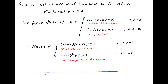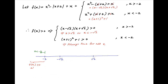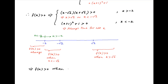Now if we plot this information on the number line, the relevant points are minus 2, minus root 2, and plus root 2. In the second case, when x is less than minus 2, f(x) is always positive. In the first case, when x is greater than minus 2, f(x) is positive when x is less than minus root 2, and also when x is greater than root 2. Therefore, f(x) is positive when x is in the interval minus infinity to minus root 2, or when x is greater than root 2. And this is the required answer.